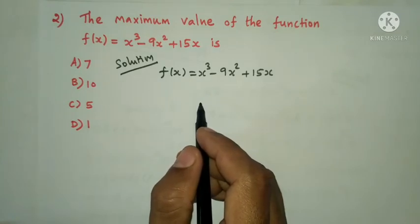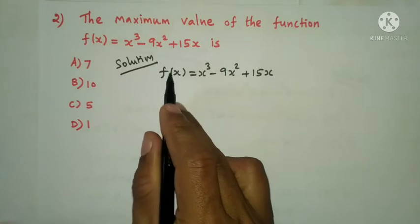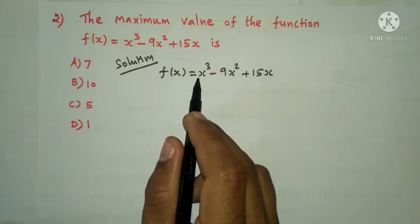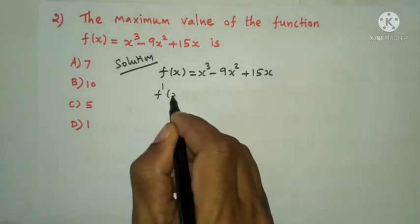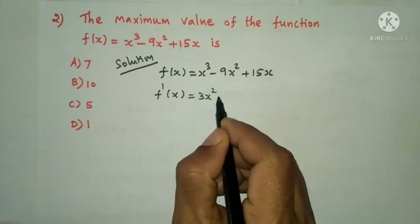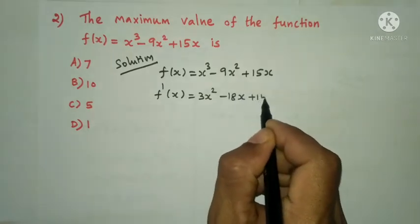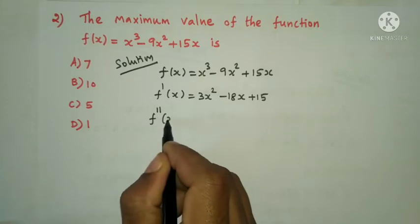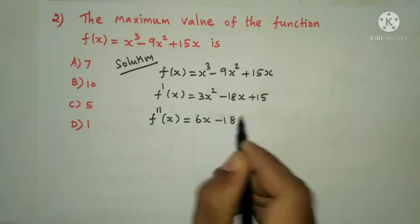First, find the critical points. f'(x) equals 3x² minus 18x plus 15. Then f''(x) equals 6x minus 18.